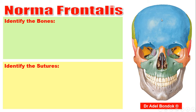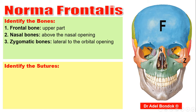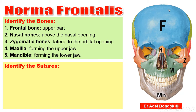Regarding the bones: the first bone from above is the frontal bone, which forms the upper part. These are the nasal bones, one on each side. This is the zygomatic bone, one on each side. This is the maxilla, forming the upper jaw. And this is the mandible.